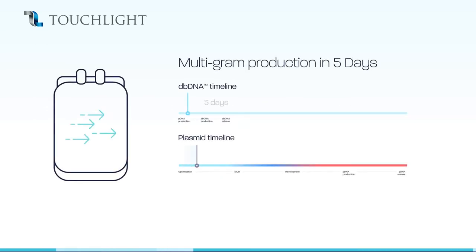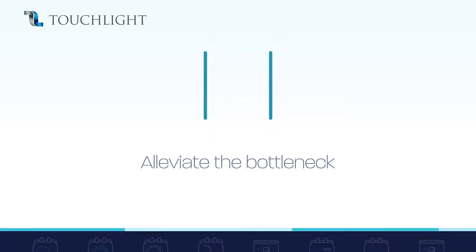Multi-gram scale GMP production of dbDNA takes only 5 days, meaning that delivery timelines from sequence to GMP release is possible in less than 50 days. dbDNA can alleviate the bottleneck in DNA manufacturing for genetic medicines.